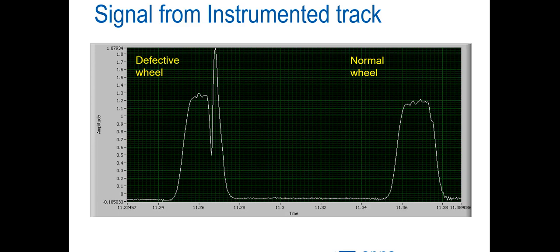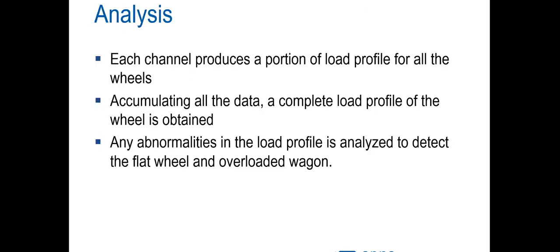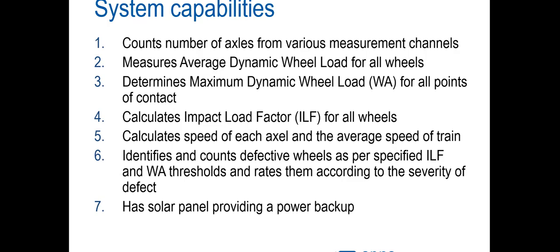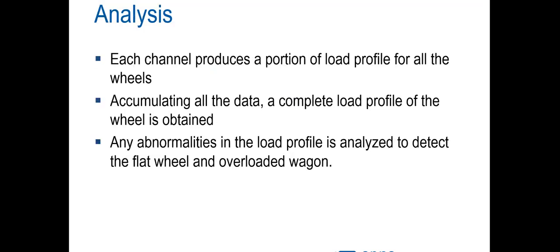A signal from an instrumented track shows a relatively flat graph for a normal wheel. If the wheel is defective, a sharp peak appears in the signal. That peak represents the maximum dynamic wheel load — it is precisely this peak that the WILD system is monitoring for.